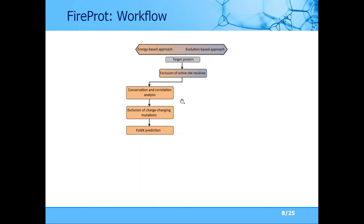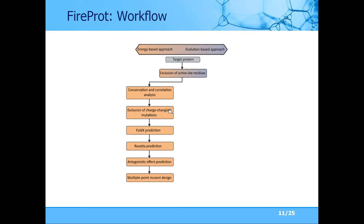With the remaining positions and mutations, we proceed with fast FoldX evaluation. We collect mutations predicted by FoldX as potentially stabilizing, then evaluate them again with a more robust force field calculation. All predicted mutations are then combined, but we cannot combine them blindly due to antagonistic effects. We cannot evaluate all possible combinations either, so instead we try all possible pairs of mutations and combine those pairs that do not show antagonistic effects, constructing a multiple-point mutant based on energy.